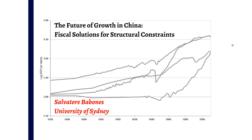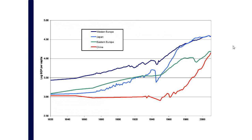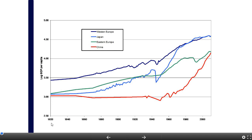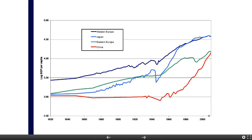I'm Salvatore Bobonis and today's lecture is 'The Future of Growth in China: Fiscal Solutions for Structural Constraints.' I'm going to start by locating China's rapid economic growth of the last 40 years in a long-term comparative and historical perspective. This chart shows the economic trajectories of four major regions of the world over the last 200 years, charting GDP per capita expressed on a log scale since 1820 up until the current day.